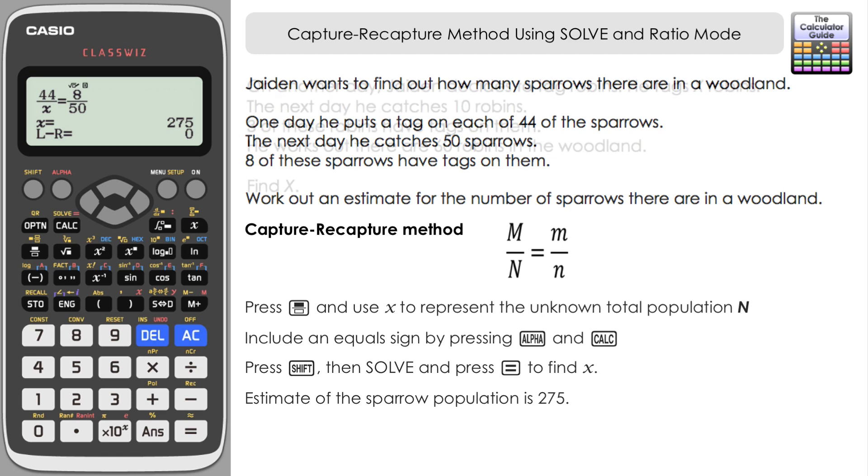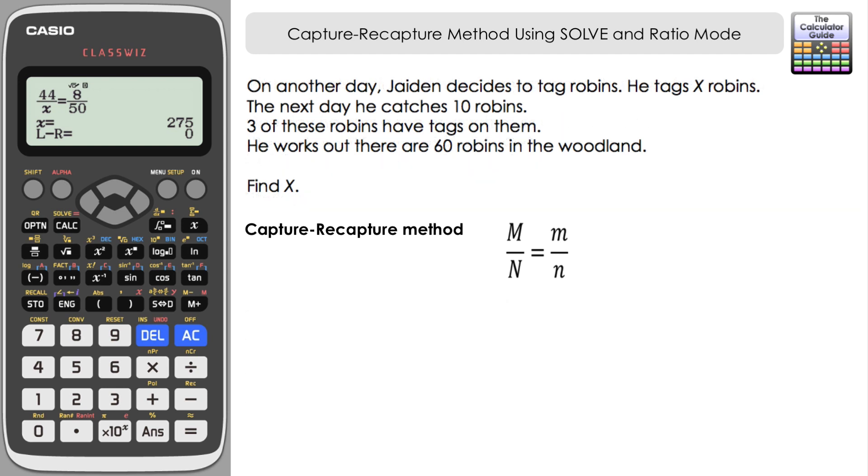Let's have a go at a follow-up question. On another day, Jaden decides to tag robins, and he tags x robins. So we don't know how many robins he initially tagged in this one. Next day he catches 10 robins, and he discovers that 3 of those robins have tags on them. From that, he works out there are 60 robins in the woodland. So 60 robins total population—we know our capital N this time, we know our little m and little n. What we don't know is the capital M on the left-hand side—that is the number of robins that were initially tagged.